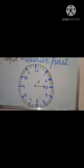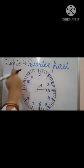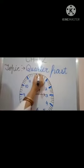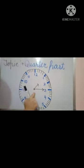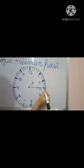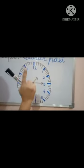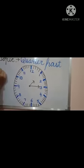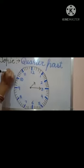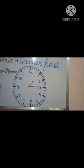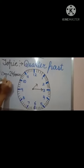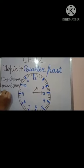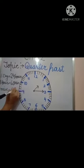Today's topic is time. In a clock there are 60 markings all around. One marking means one minute, and when the long hand goes from one mark to another, it takes one minute. Remember: one day is equal to 24 hours, one hour is equal to 60 minutes, and one minute is equal to 60 seconds.